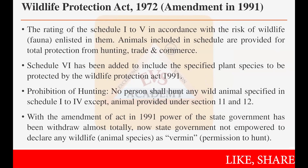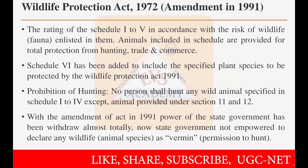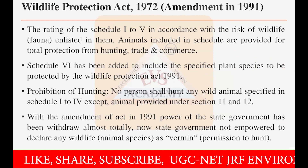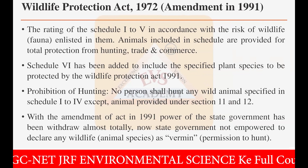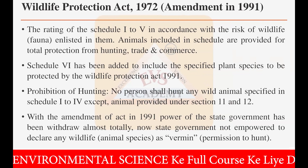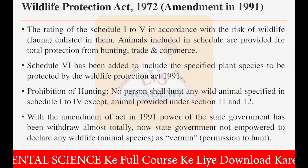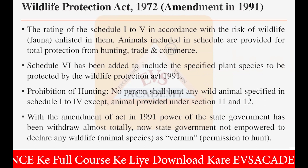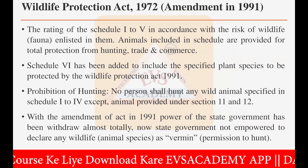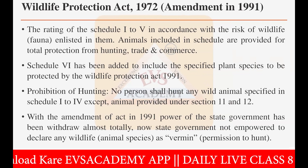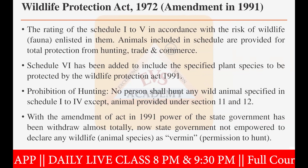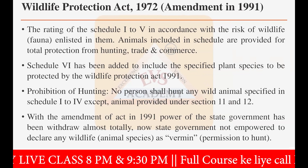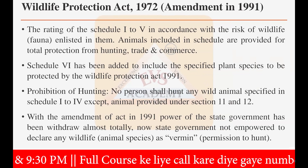We have to discuss the Wildlife Protection Act of 1972, which was amended in the year 1991. The rating of schedules one to five is in accordance with the risk of wildlife. This act has a total of five schedules — schedule one, two, three, four, and five — and it includes all wildlife, including fauna.